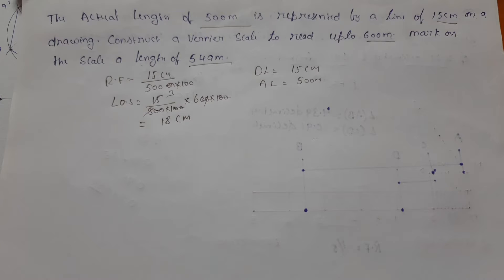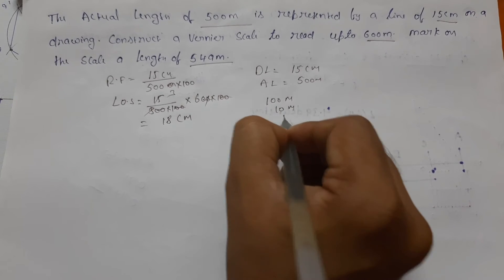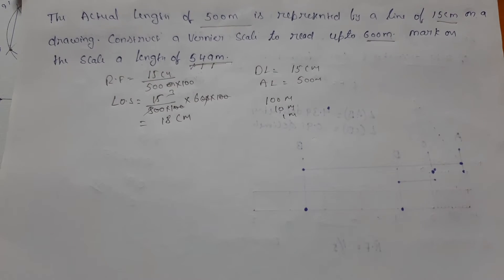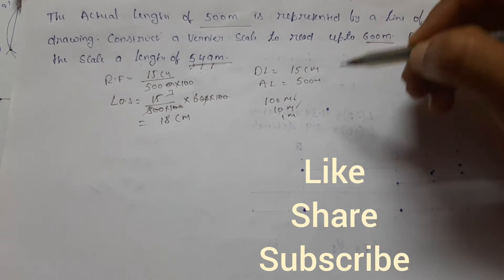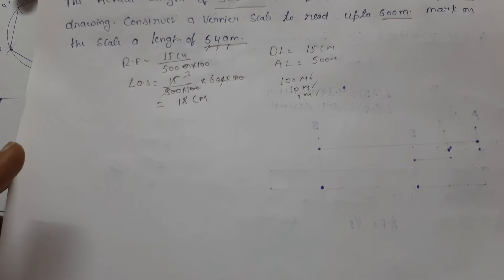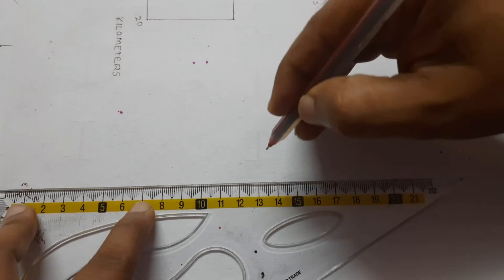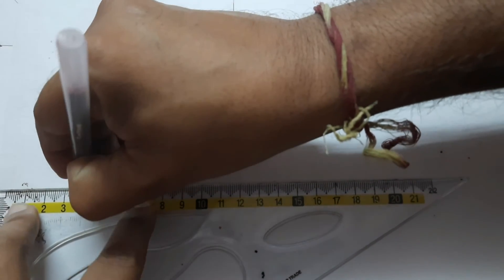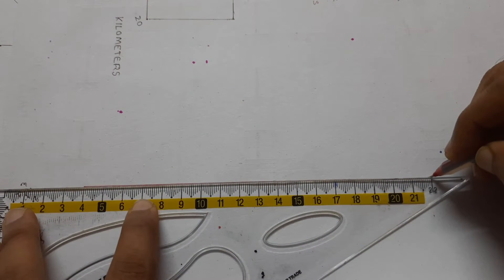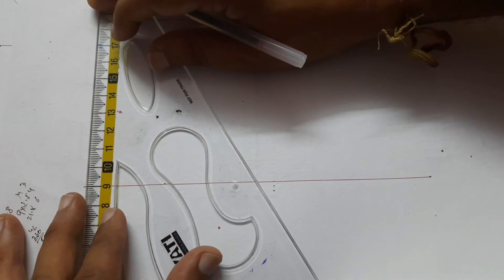Mark the scale length of 549 meters. We maintain 549 with 100 meters, 10 meters, and 1 meter. So indicate: 100, 10 meters, 1 meter — indicate okay. First of all draw the 18 centimeters line.